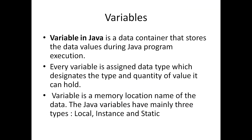What is a variable? A variable in Java, or any programming language, is a data container which stores whatever values we are assigning and whatever values we want to use. We can't use values directly — first we must declare a variable. A variable has the capability to store values during program execution.